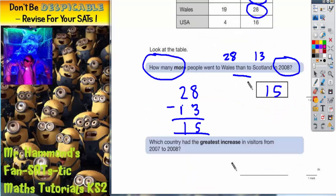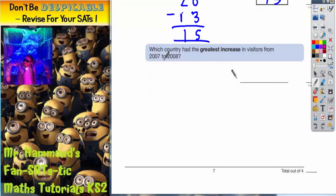Let's get a different color for part 2. It now says which country had the greatest increase in visitors from 2007 to 2008? So we're looking for an increase. Let's go back to the table.